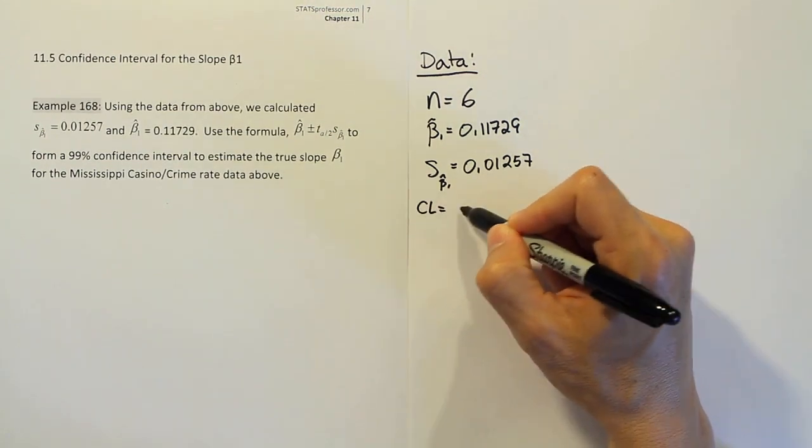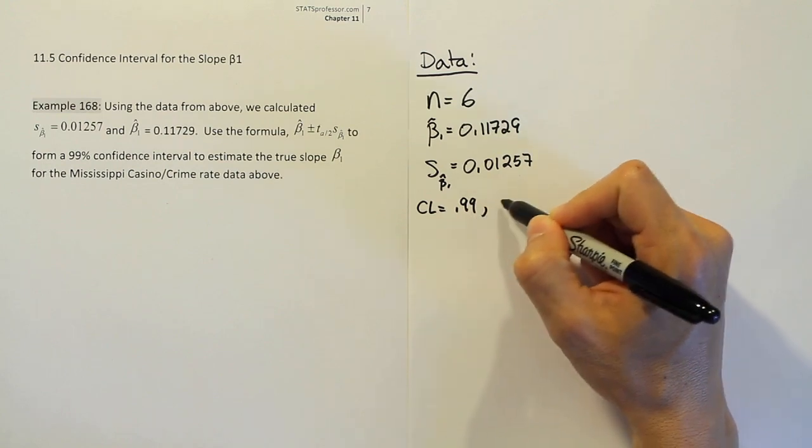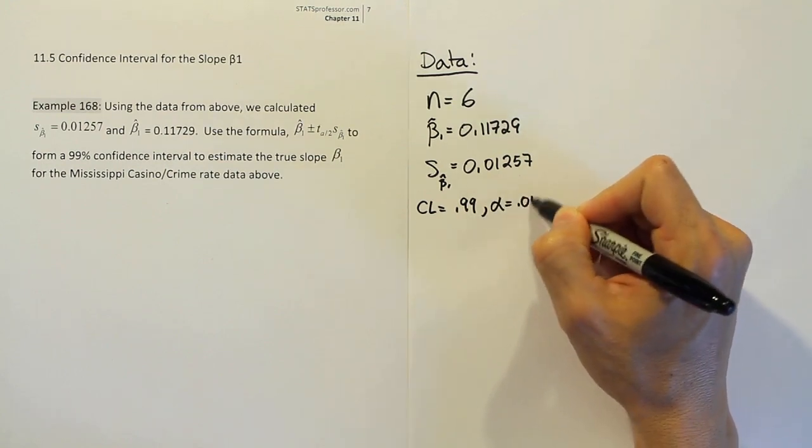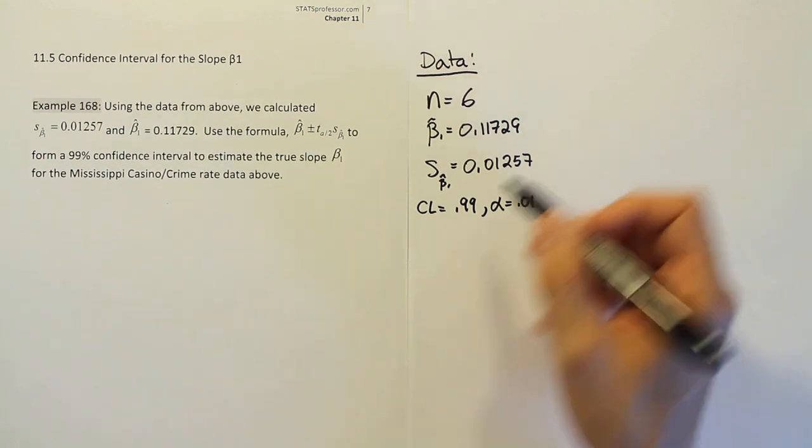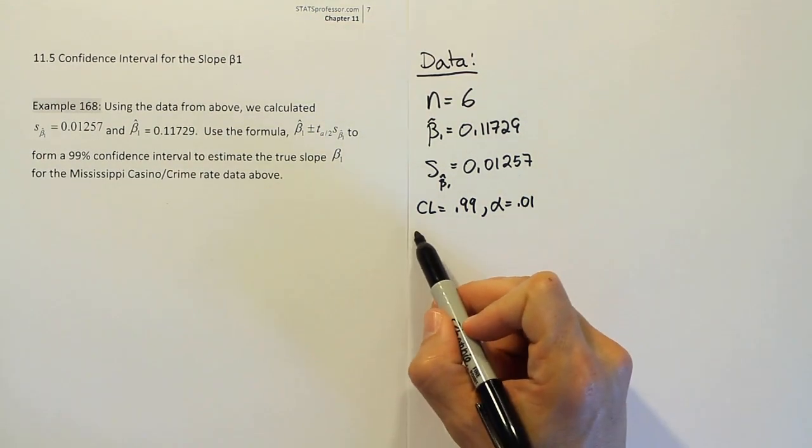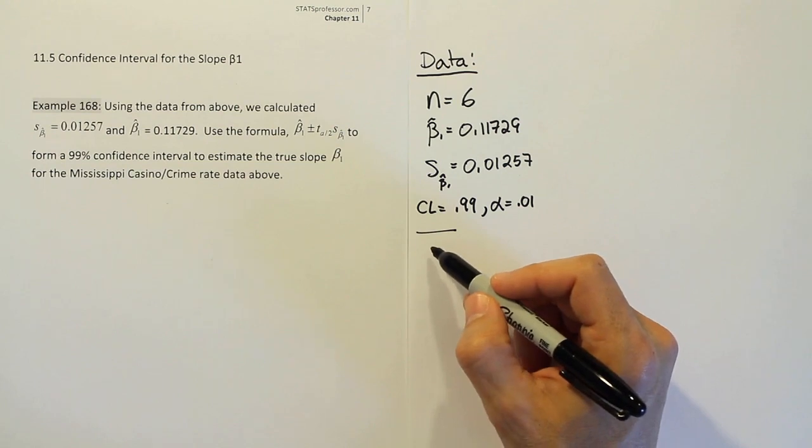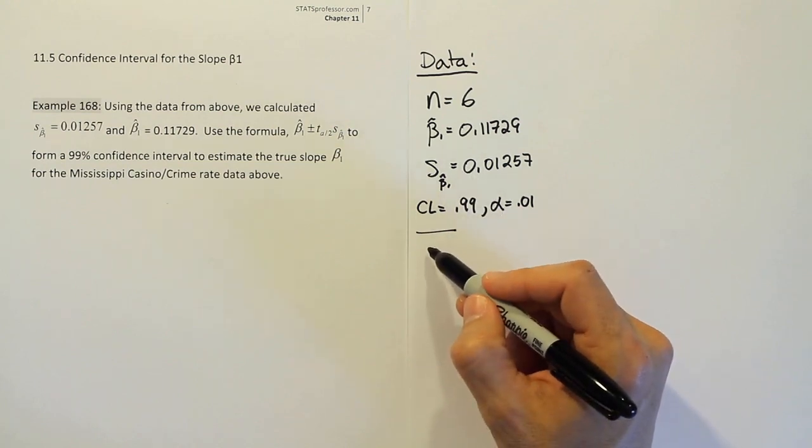Once you have those things, we should write down the confidence level which is 0.99 and of course that leads to an alpha of 0.01 because remember these two must add up to 100%. Now once you have that, you're going to go down to our critical value step of the confidence interval. So this would be officially step two.